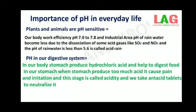First of all, you all know that plants and animals are pH sensitive. Our body works within the pH range of 7 to 7.8. Living organisms can survive only in a narrow range of pH change.